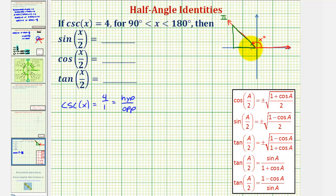So this would be our reference angle, and the ratio of the hypotenuse to the opposite side would be four to one. So we can label the hypotenuse four, the opposite side one.